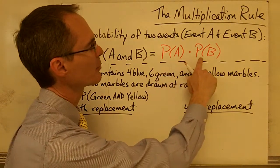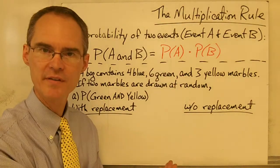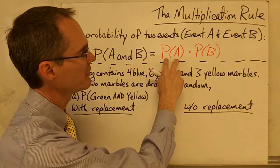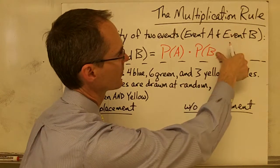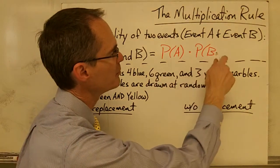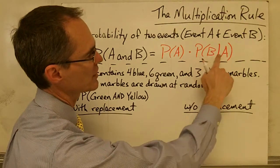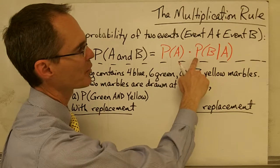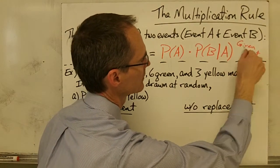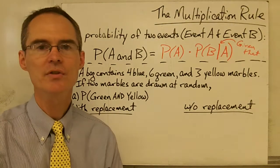Except it turns out that very often the probability of the second event — that is, how likely it is that the second event is going to happen — depends on what happens in the first event. So the way we handle that in this formula is we write: the probability of event A and event B happening equals the probability of event A times the probability of event B given that event A has already happened. That vertical line notation means "given that."